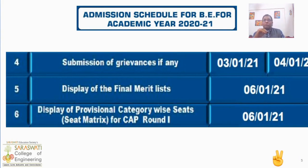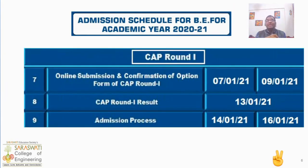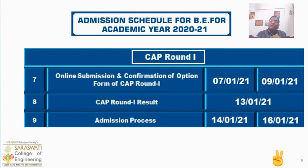On the same day, you will also get the seat matrix of the different colleges, so you can come to know how many seats and category-wise availability exist at different colleges throughout Maharashtra. The next activity is CAP Round 1. You have to fill the option form between 7th January 2021 to 9th January 2021 for CAP Round 1. In this, you can select any 300 colleges all over Maharashtra. As per your choice and rank, you can prepare your list. On 13th January 2021, the CAP Round 1 result will be displayed provisionally.